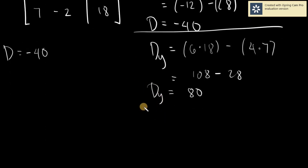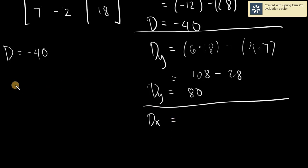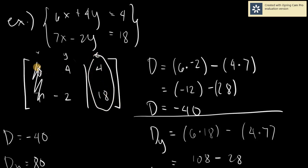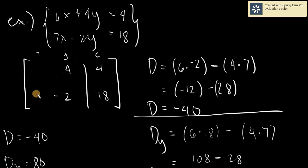The next thing you need is D sub x. We write down D sub y equals 80. D sub x is solved by covering x — what remains is 4, negative 2, and 4, and 18. We replace x with the constants 4 and 18, and cross multiply: 4 times negative 2 minus 4 times 18.